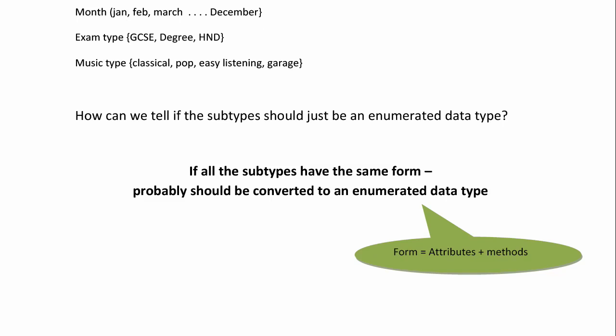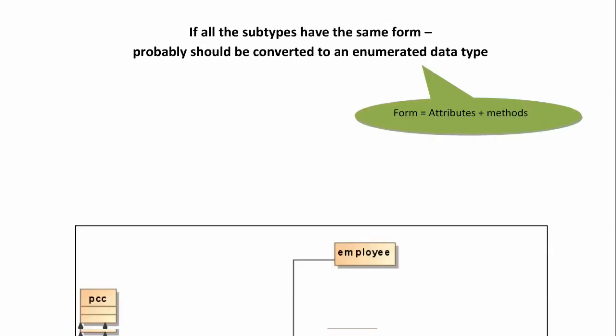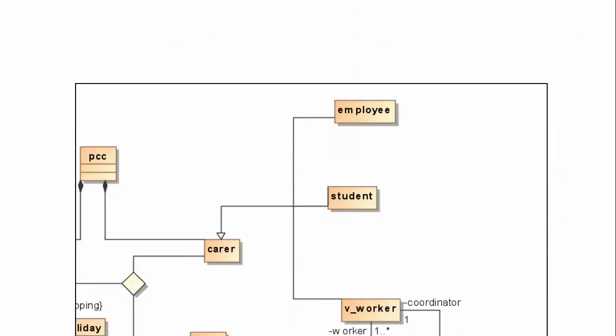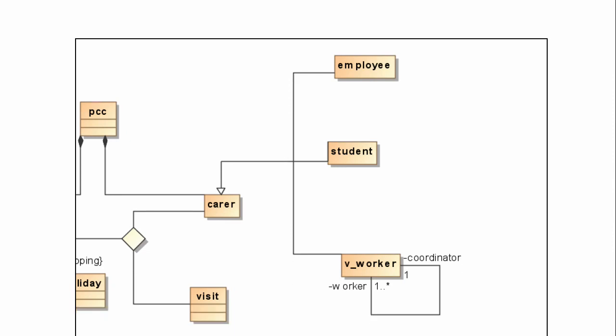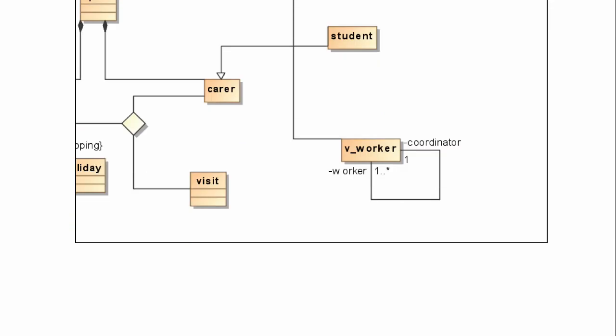Let's look at the PCC example, our primary care center example, to see if I actually made appropriate use of inheritance and generalization. I had carer as a superclass and then employee, student, and voluntary worker. Do they have the same form? The only way you can tell is by looking at the attributes.